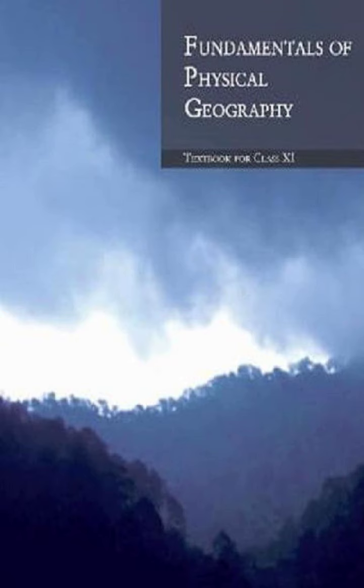Diastrophism: all processes that move, elevate, or build up portions of the earth's crust come under diastrophism. They include: first, orogenic processes involving mountain building through severe folding, affecting long and narrow belts of earth's crust; second, epirogenic processes involving uplift and warping of large parts of the earth's crust; and third, earthquakes involving local, relatively minor movements.